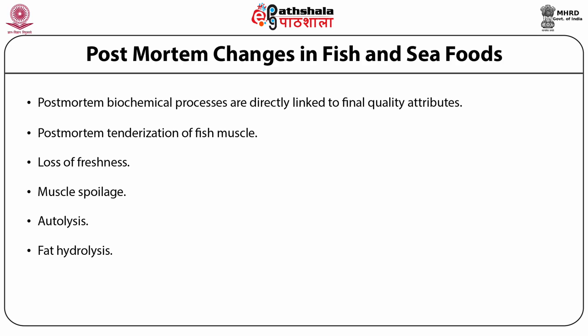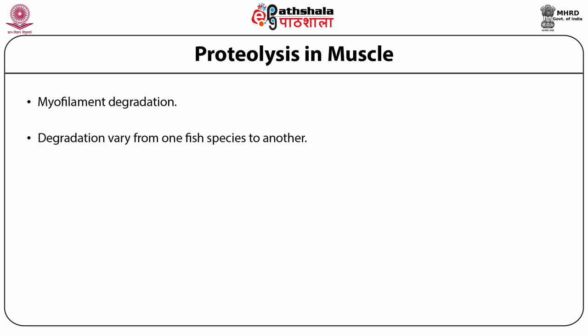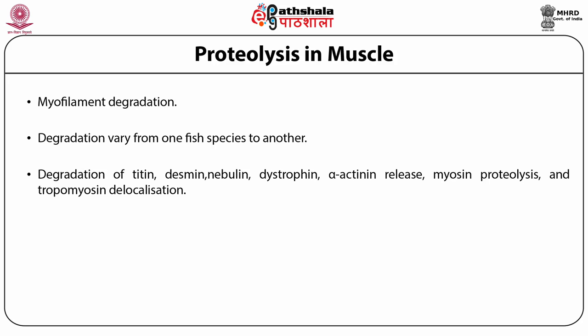Proteolytic mechanisms involved in post-mortem disorganization of fish muscle are characterized by identifying the myofibrillar components undergoing proteolysis, as well as by studying the involved proteases, especially calpains and their effects in vitro on myofibrillar proteins. Proteolysis of cytoskeleton compounds results in myofilament degradation. In fish, depending on species, this may include degradation of titin, nebulin, dystrophin, alpha-actinin release, myosin proteolysis, and tropomyosin delocalization.